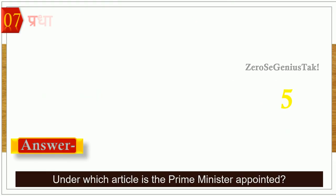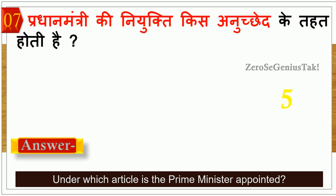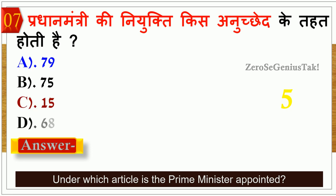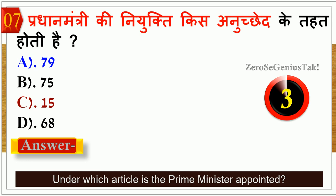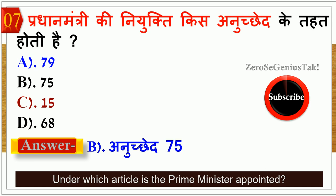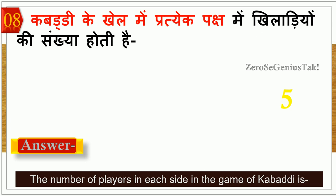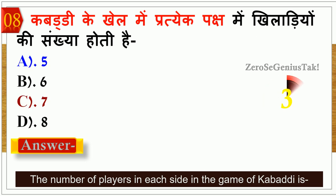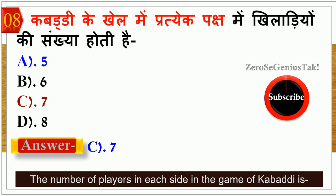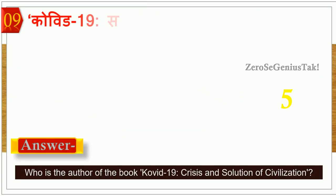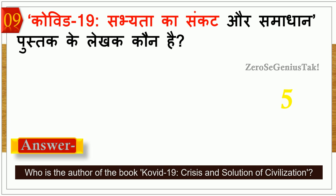अगले important question में पूछा जा रहा है: प्रधानमंत्री की नियुक्ति किस article के तहत होती है? प्रधानमंत्री की appointment किस article के तहत होती है? इसका सही जवाब है option number B — Article 75.